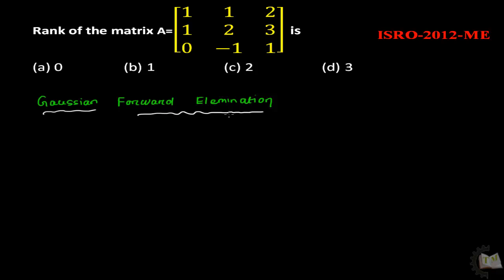I will explain the procedure how to find the rank of matrix in Gauss forward elimination method. You always try to convert that matrix, the given matrix, to an echelon form. I will explain you what is echelon form.